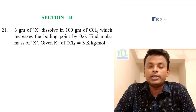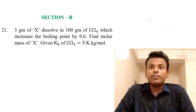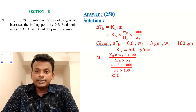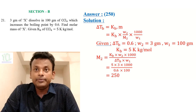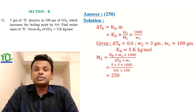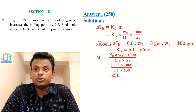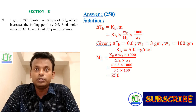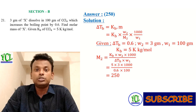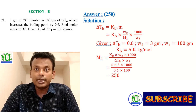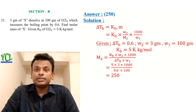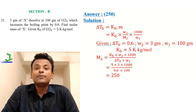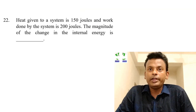Section B, Question 21: 3 grams of X dissolved in 100 grams of CCl4 increases the boiling point by 0.6 K. Find the molar mass of X, given Kb for CCl4 is 5 K·kg/mol. Using ΔTb = Kb × m and molality formula: m = (w2/M2) × (1000/w1), putting all values gives M2 = 250. So the answer is 250.